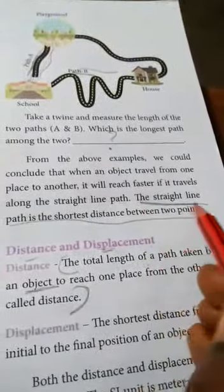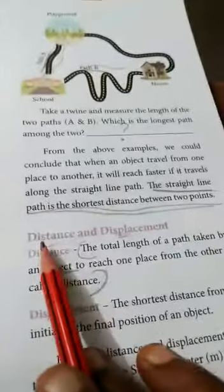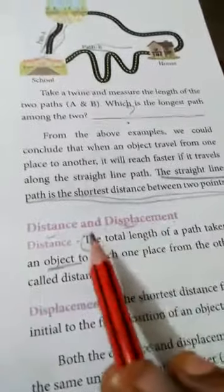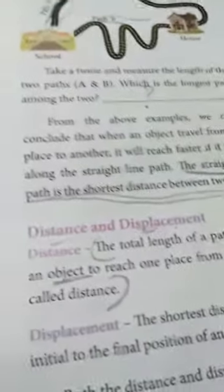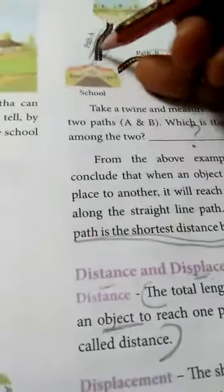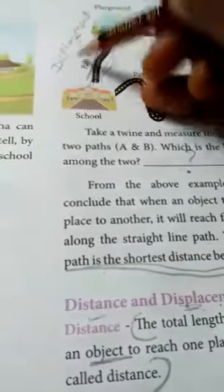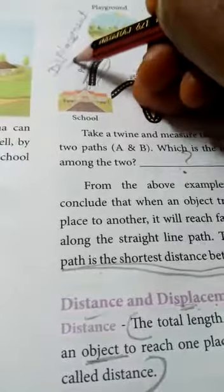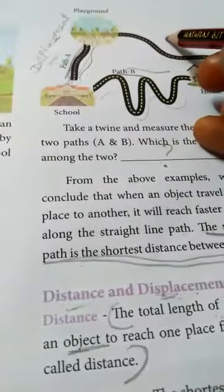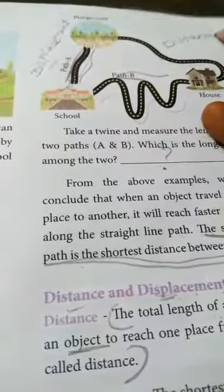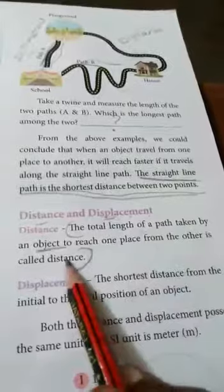The straight line path is always the shortest distance between two points. The total length of the path taken by an object to reach from one place to the other is called distance.